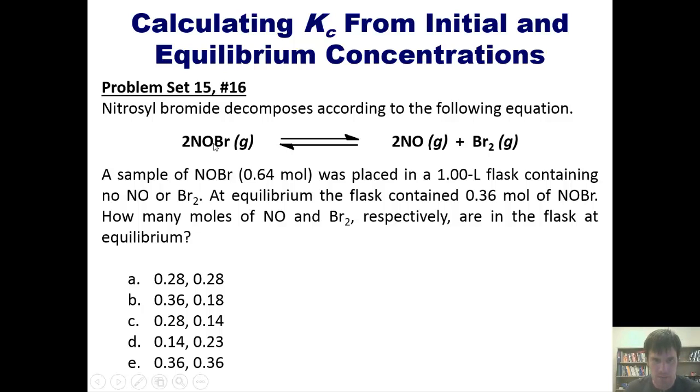Now this example. Nitrosyl bromide, this crazy compound right here, decomposes according to this equation. A sample containing this many moles of nitrosyl bromide is placed in a 1 liter flask containing zero or no nitrogen monoxide and bromine. At equilibrium, the flask contains this many moles of nitrosyl bromide. How many moles of NO and Br2 respectively are in the flask at equilibrium? Like the previous example, I'm not going to show you the answer right here, but I will give you the hint that it requires doing an ice table, just as we did with the example earlier. You're welcome to pause the video here, attempt it on your own, and then if you wish, click the link down here in which I will show you how to do it on the board.